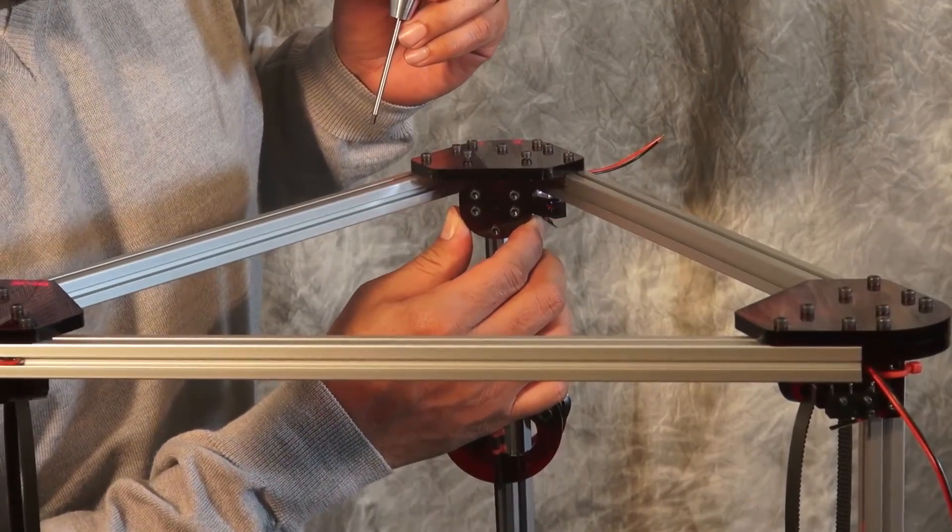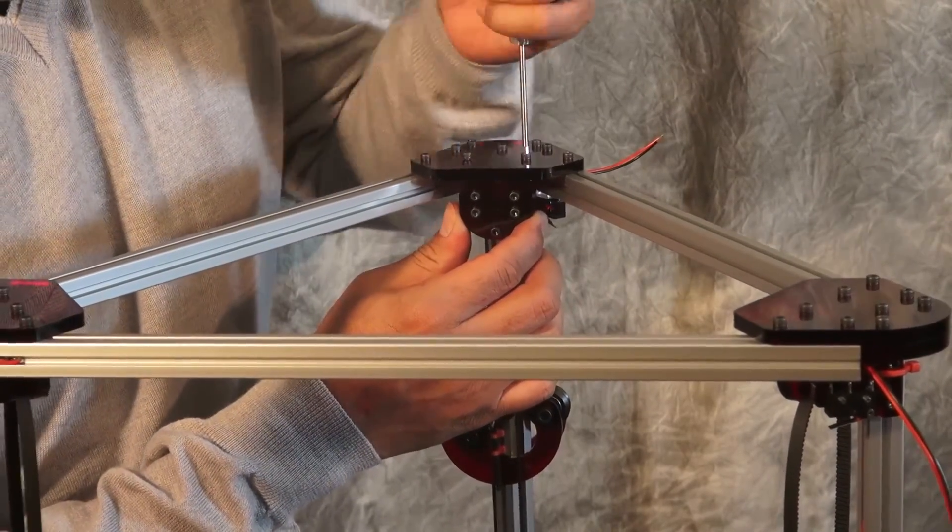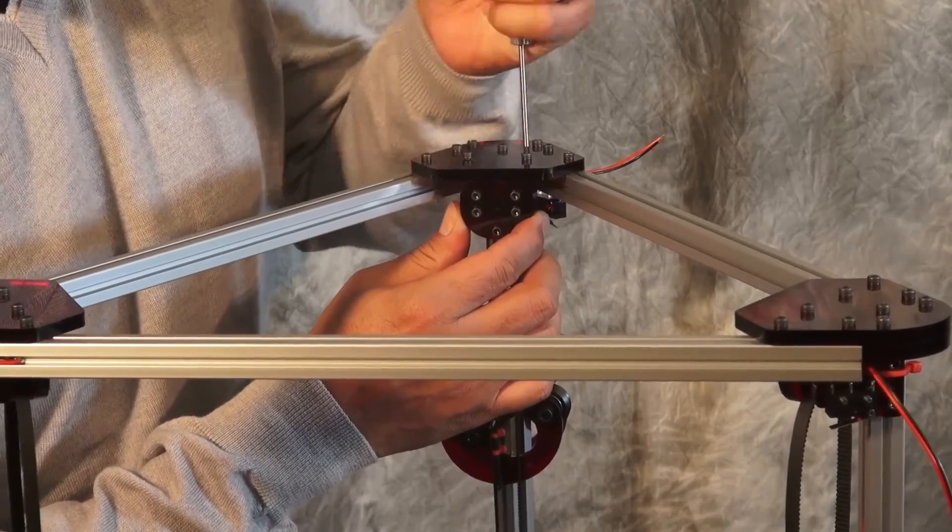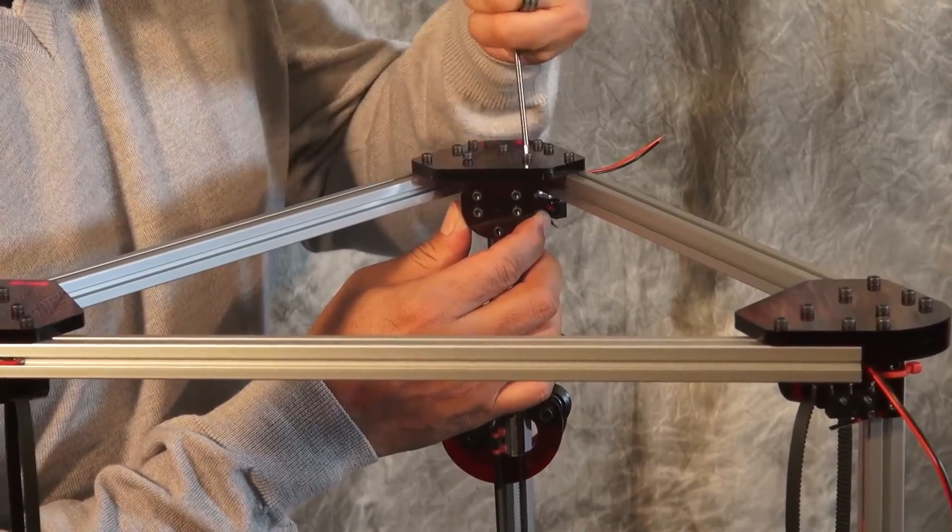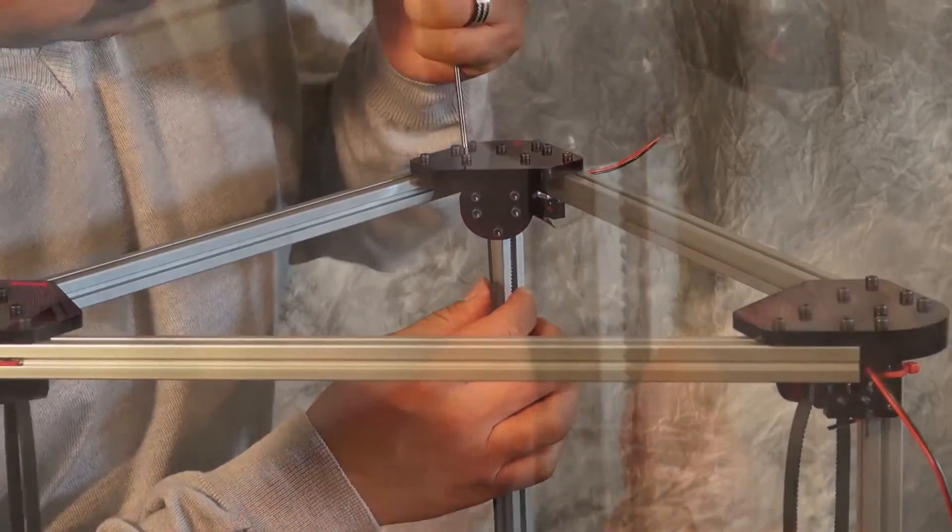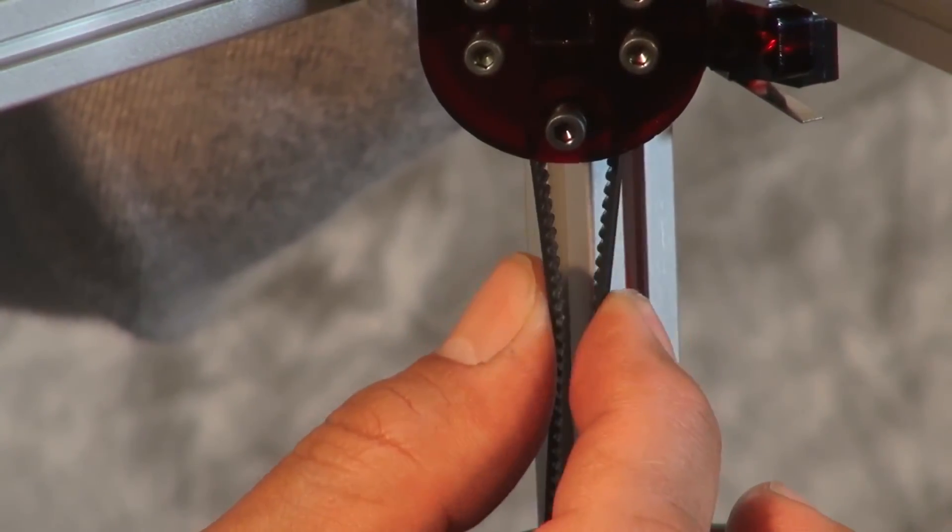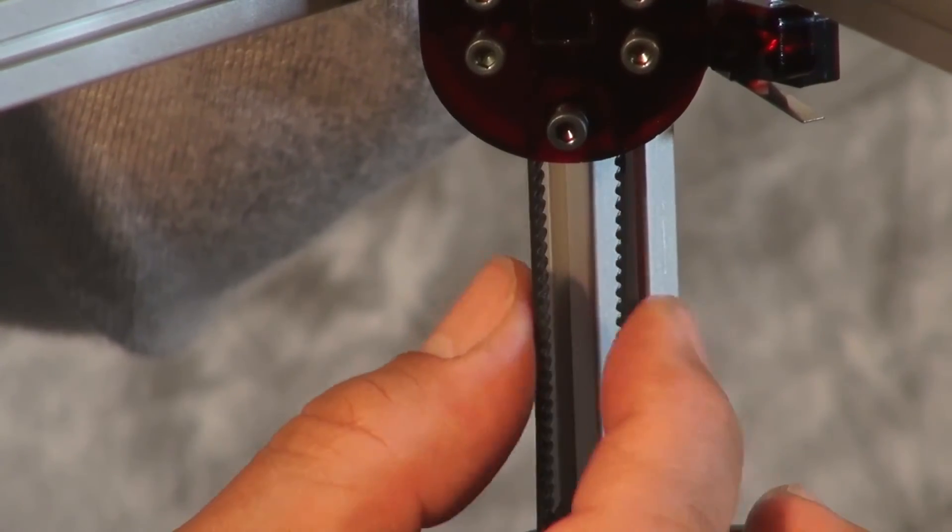We're going to tighten these screws that we left loose up top. So by tightening these, it's going to pull up on the belt guide. Tighten it to your preferred tension. You basically want where the belt does not touch when applying slight pressure.